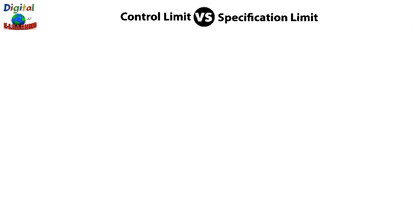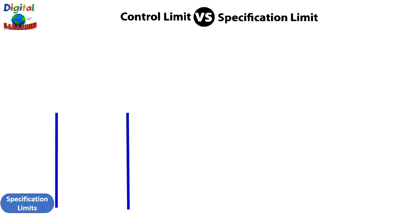Control limits have no relation to specification limits. Let us understand this with the help of a car parking analogy. When you are trying to park your car in a garage, there are three possible scenarios. Case one: when control limits fall within the specification limits.